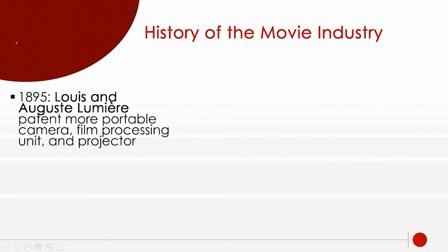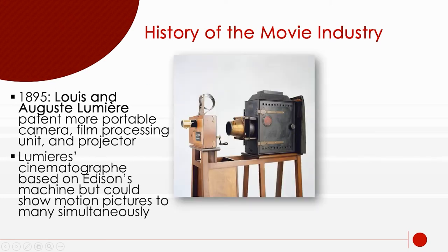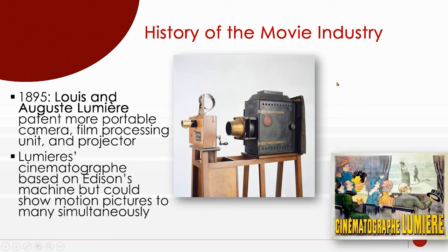Then Louis and Auguste Lumière came up with the idea of a portable camera, how to process the film, and a projector. The idea of projecting the film so that a bunch of people could watch it all at once — instead of just being a peep show — was their idea. They started the concept of going to watch a movie be projected to you, which became the Cinématographe Lumière.